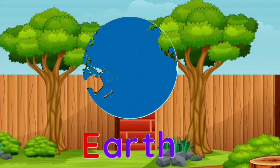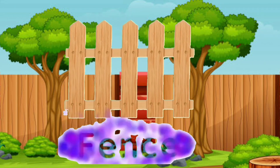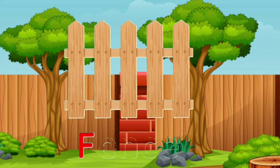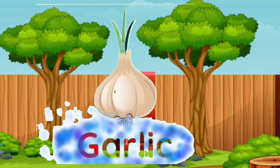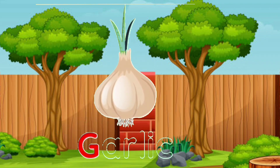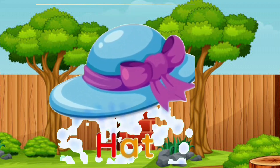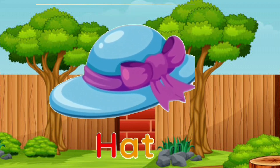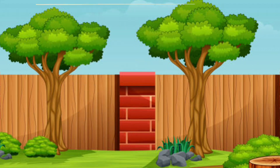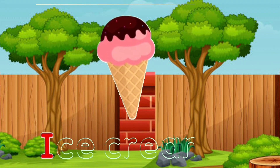E is for earth, F is for fence, G is for garlic, H is for head, I is for ice cream.